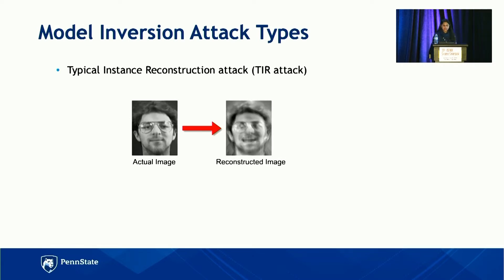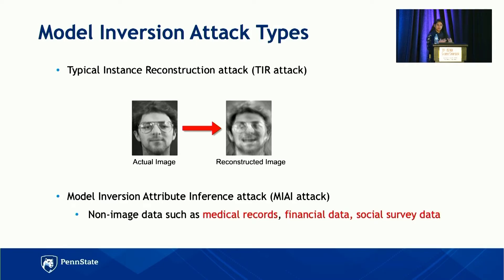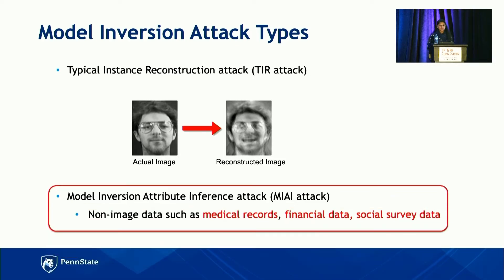We divide model inversion attacks into two high-level types. The first is typical instance reconstruction, which applies mostly to the image domain and is much studied, where the adversary tries to reconstruct a representative image of the actual one — it doesn't have to be exactly the same. The second type is model inversion attribute inference attack, where the goal is to reconstruct the exact value of the sensitive attribute. This applies mainly to the non-image domain, mostly tabular datasets, which includes medical records, financial data, social survey data, and so on. Our focus in this work is this second type — sensitive attribute inference.